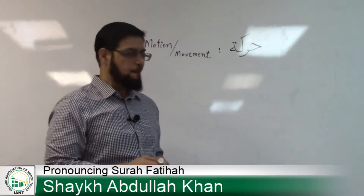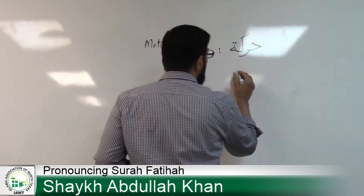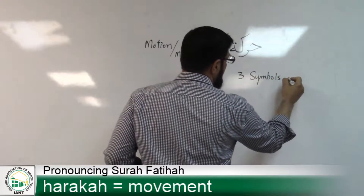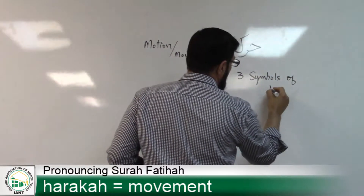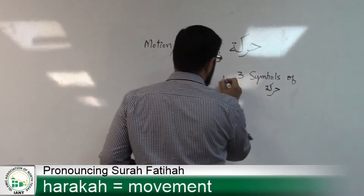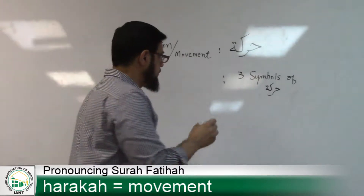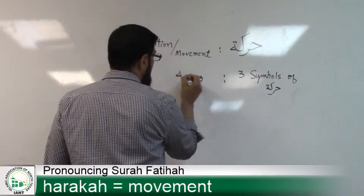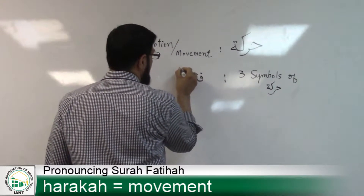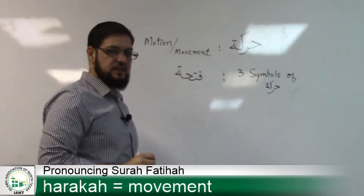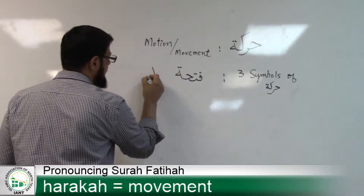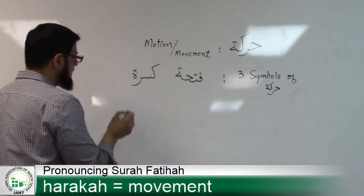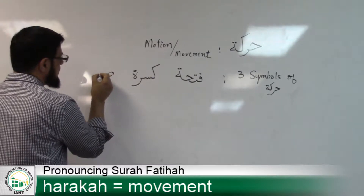There are certain symbols of Haraka — basically three symbols of Haraka. What are the three symbols? The first one is called Fathah. This is the first symbol — it's called Fathah. The second symbol is called Kasra. And the third symbol is called Dhammah.